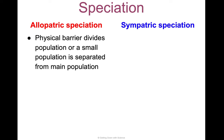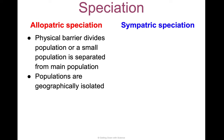Allopatric speciation is when a physical barrier divides a population, or a small population is separated from the main population — for example, a founder's effect. Populations are geographically isolated.